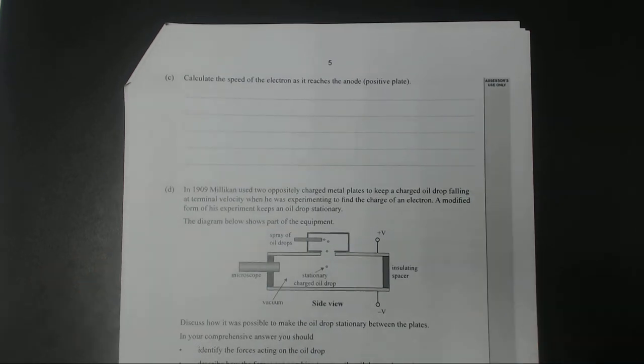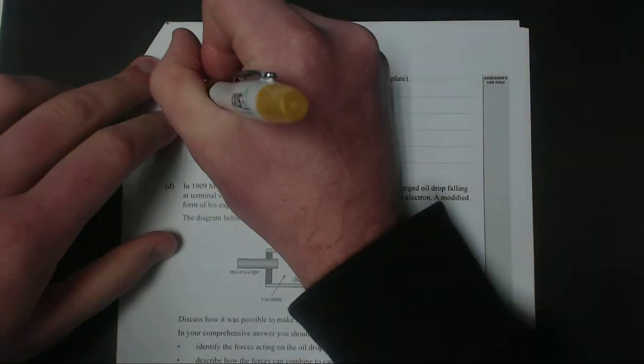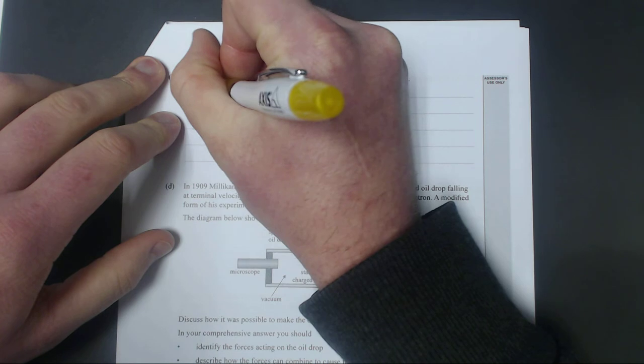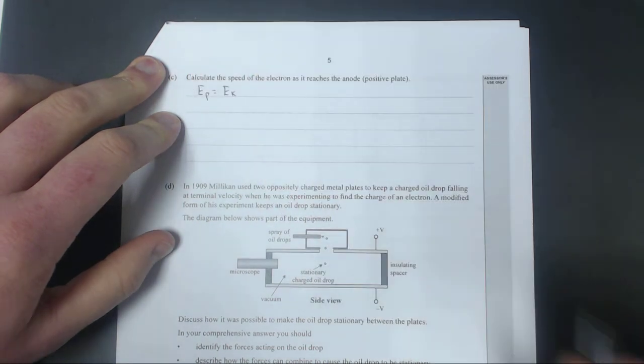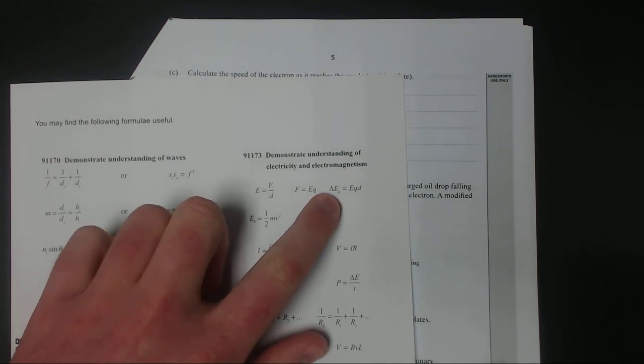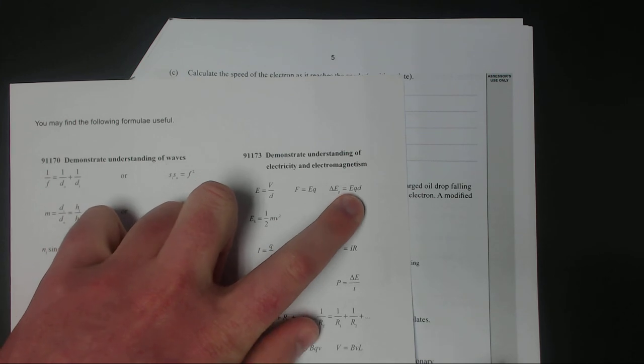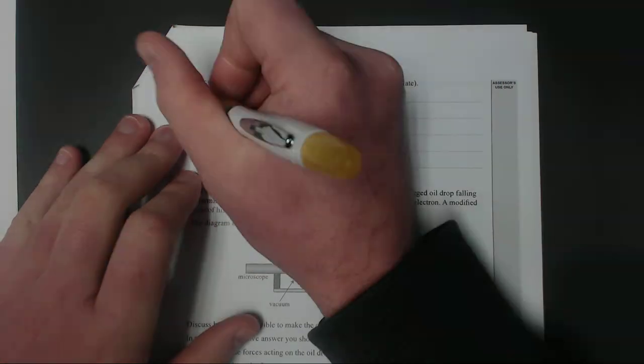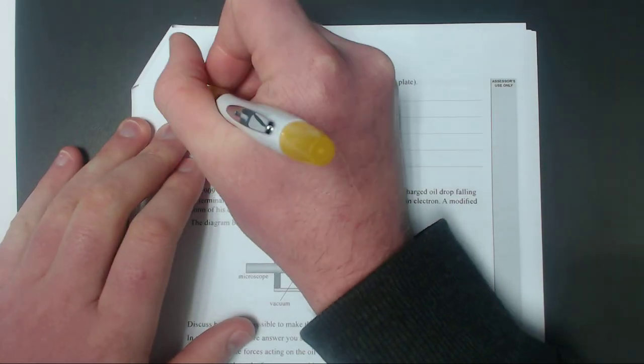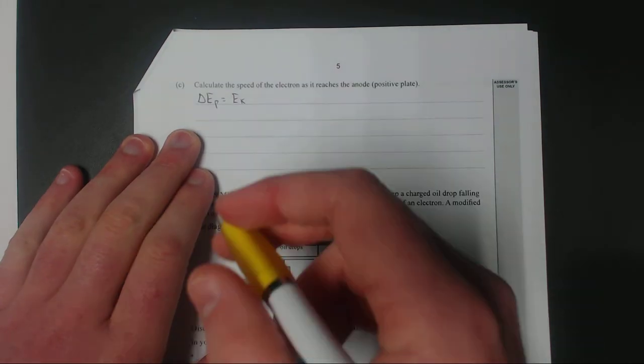Calculate the speed of the electron as it reaches the anode, positive plate. So we've just said previously that the potential energy is converted into the kinetic energy. And on our formula sheet, we have the electric potential, the electric potential energy is equal to the electric field times the charge times the distance. I'll put a delta in front of that, just so you don't get confused with the electric field.